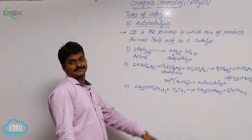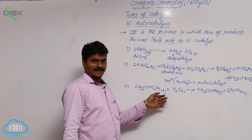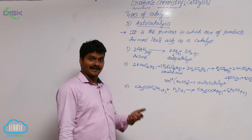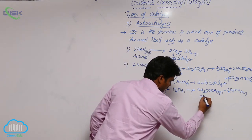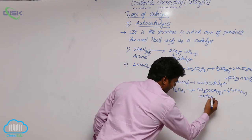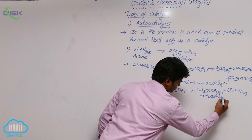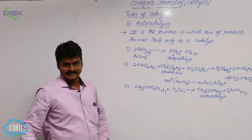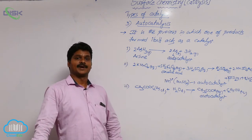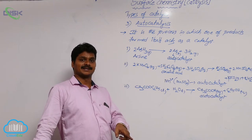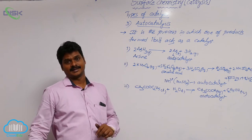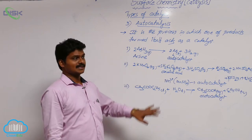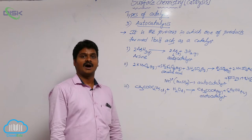These are the products. This reaction is also initially slow, but in the progress of the reaction it is accelerated due to the formation of acetic acid. Acetic acid acts as the autocatalyst here. So autocatalysis is the process in which one of the products formed itself acts as a catalyst, and that product is called the autocatalyst.